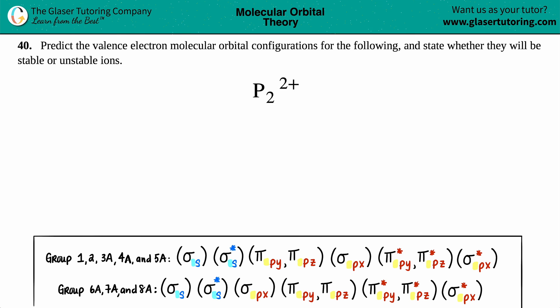Number 40. Predict the valence electron molecular orbital configurations for the following and state whether they will be stable or unstable ions. And then we have P₂ 2+. Okay, so before we look at the mess down at the bottom, the first thing we have to figure out is how many total valence electrons are there in P₂ 2+.